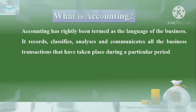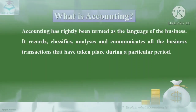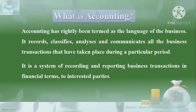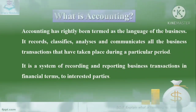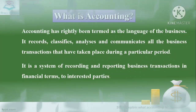A particular period means a financial year — that is, 1st April to 31st March — or a quarter year of three months, or a half year of six months, depending on the business organization. So accounting records, classifies, analyzes, and communicates transactions in a particular period. It is also a system of recording and reporting business transactions in financial terms to interested parties, which means the stakeholders of the business.